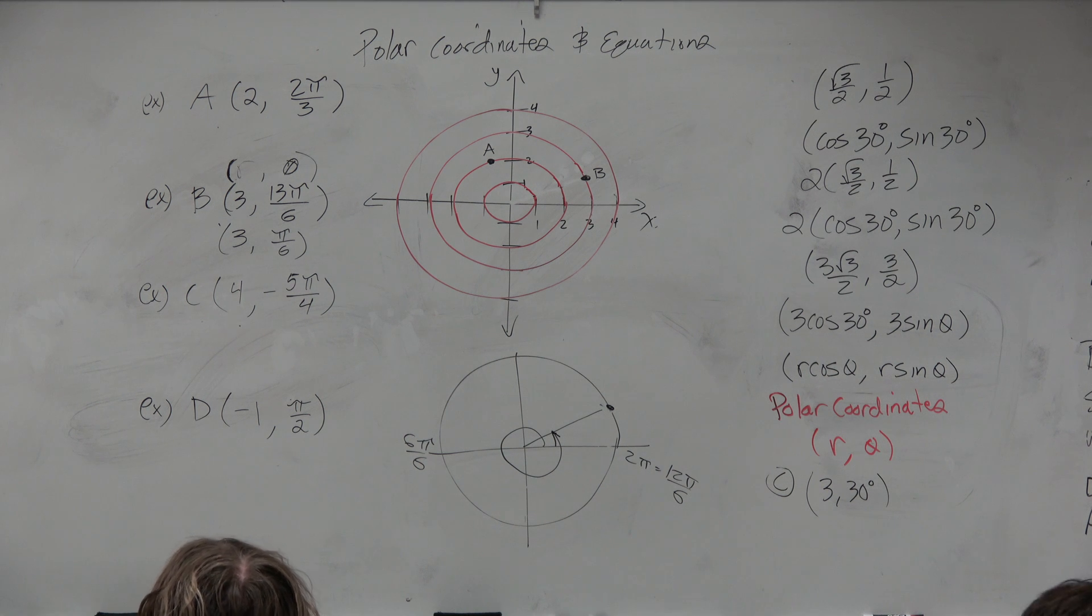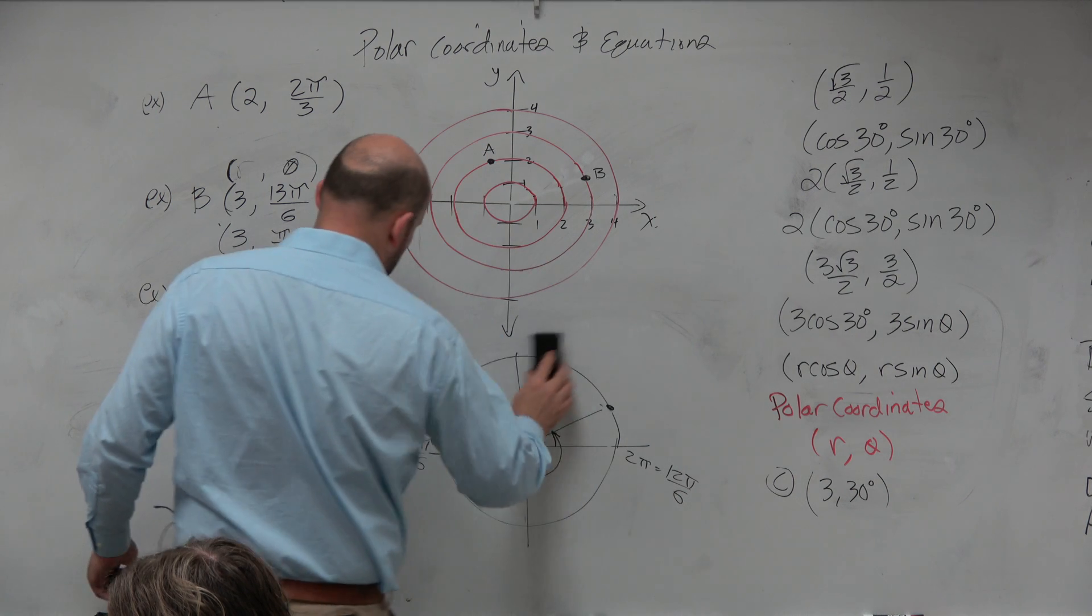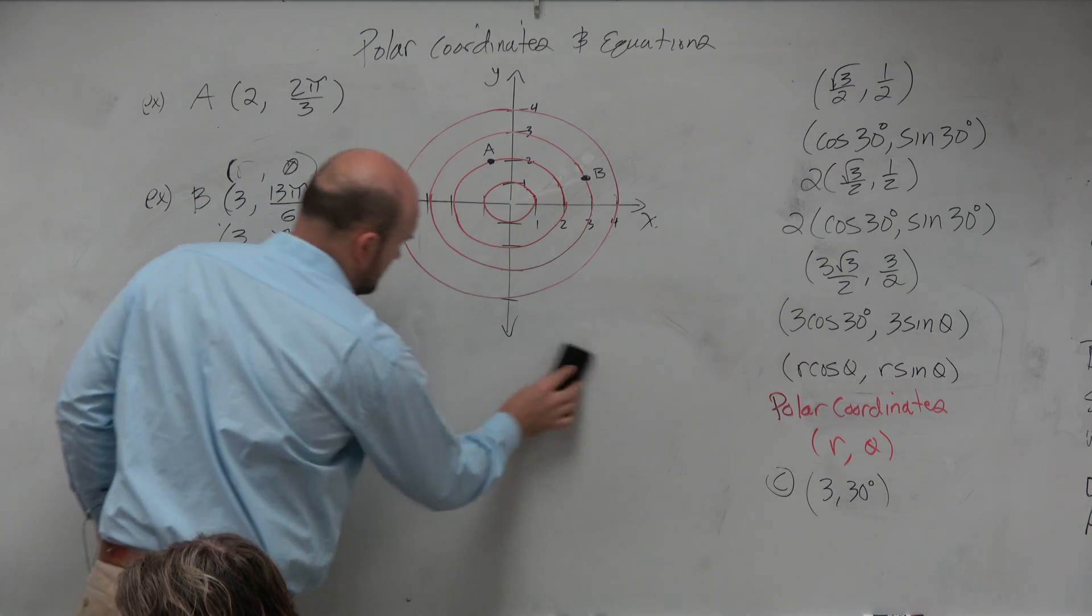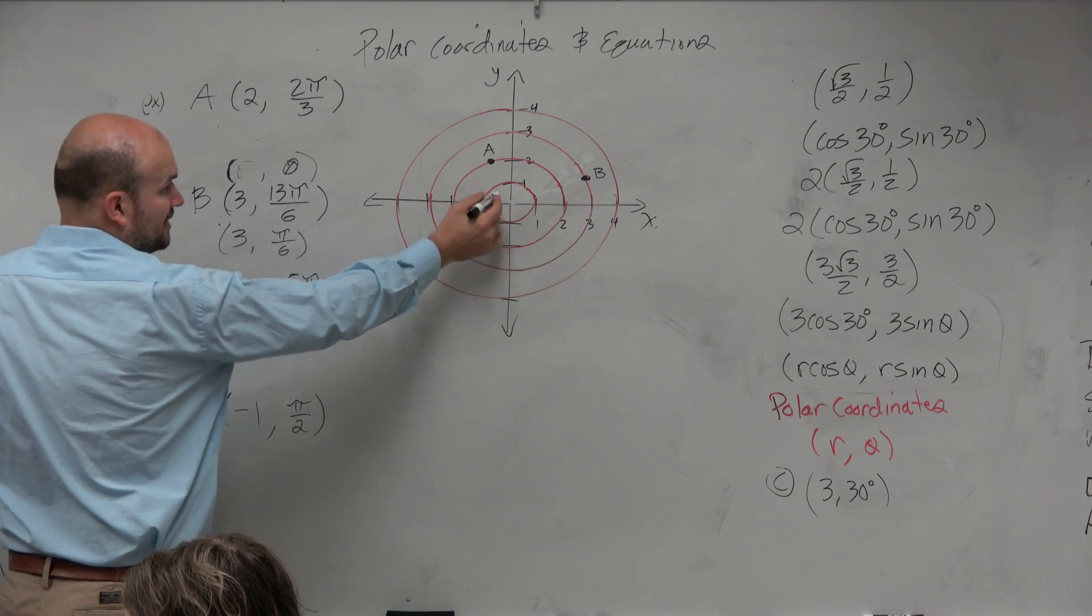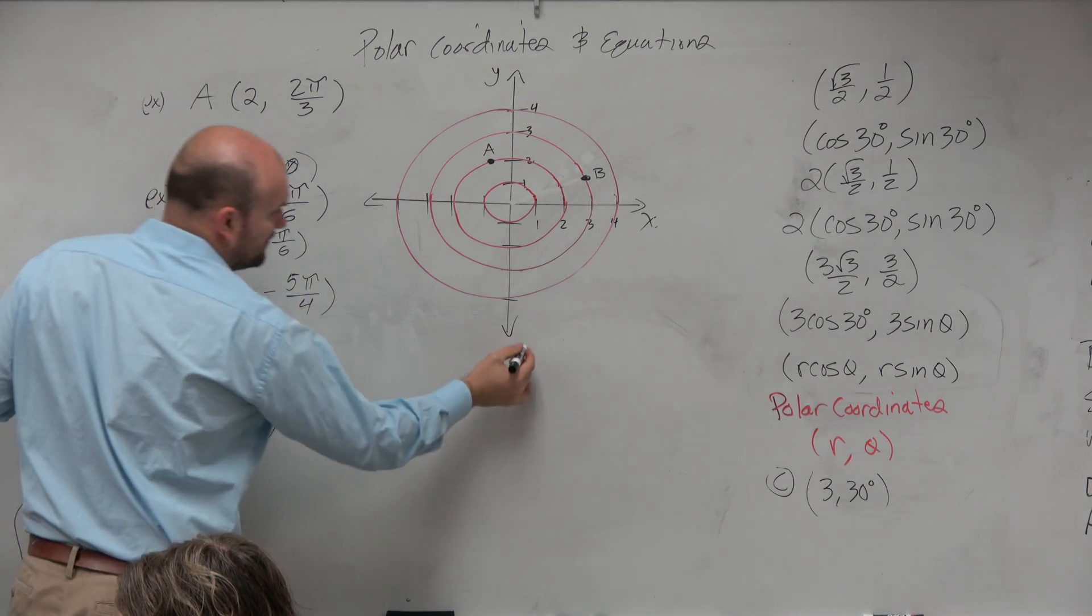Let's make this quick then for C. We're at a radius of 4, but we're at negative 5π over 4. So just remember, the radius is 4. Therefore, we're going to go to the fourth ring, negative 5π over 4.